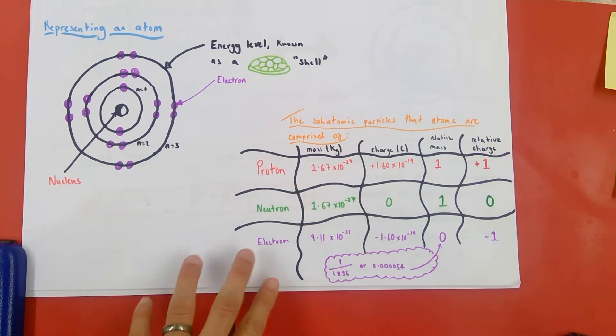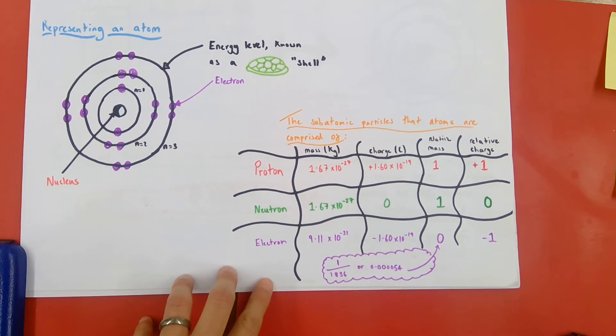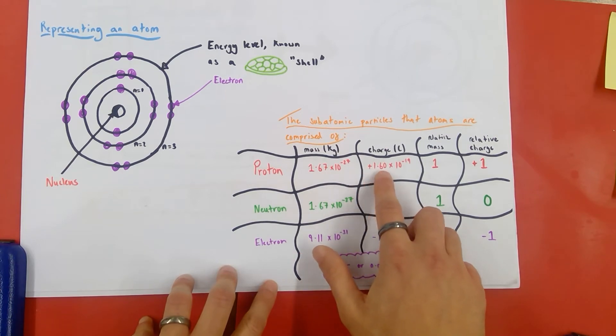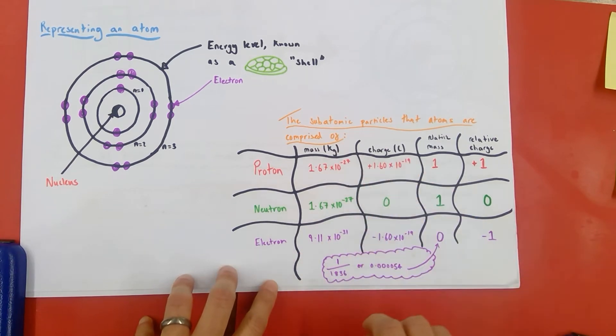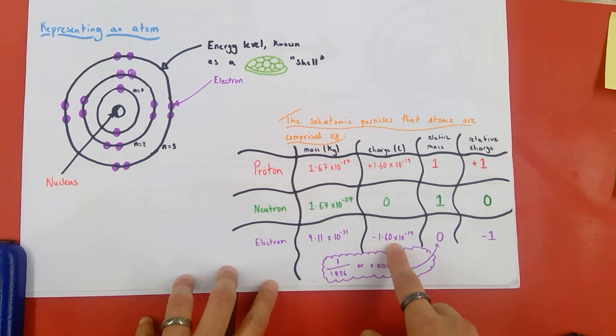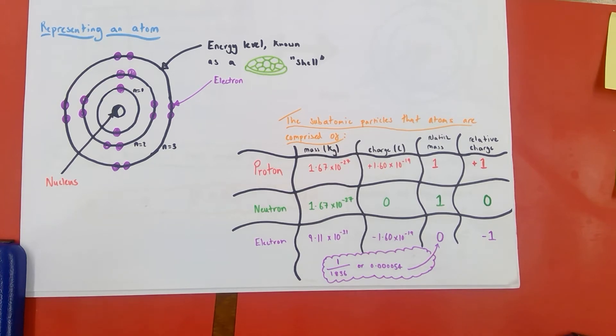So, very hard to sort of work with. Similarly, the charges of these particles is also incredibly small. 1.6 times 10 to the minus 19 coulombs for a proton. That's amperes or amps per second. And minus 1.60 times 10 to the minus 19 for electrons. Their charges are incredibly small. So, in an everyday context, we can't really utilize these numbers. We need to use much more simplified numbers to help us understand them. And so, that's where these relative mass numbers and relative charge numbers that you guys have to learn come in.